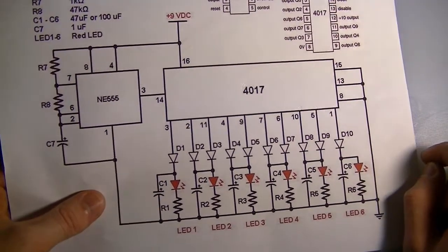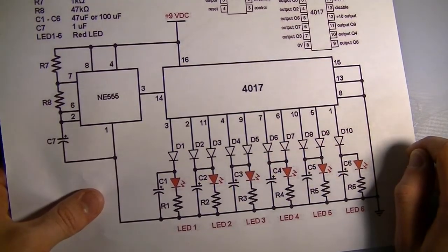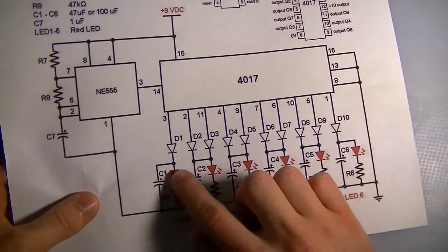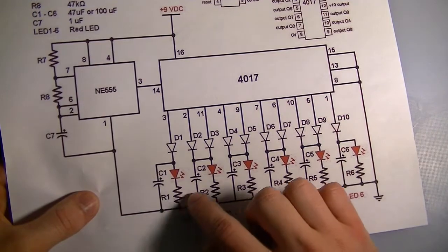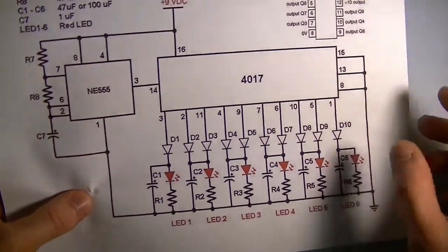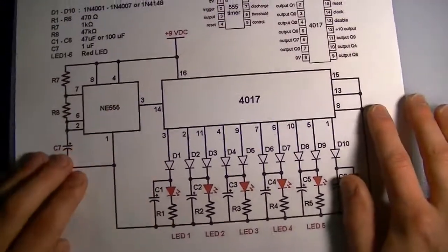The 1 of 10 output from that decade counter will be decoded with some diodes, and that will then power our six LEDs and produce the scanning effect that we desire.